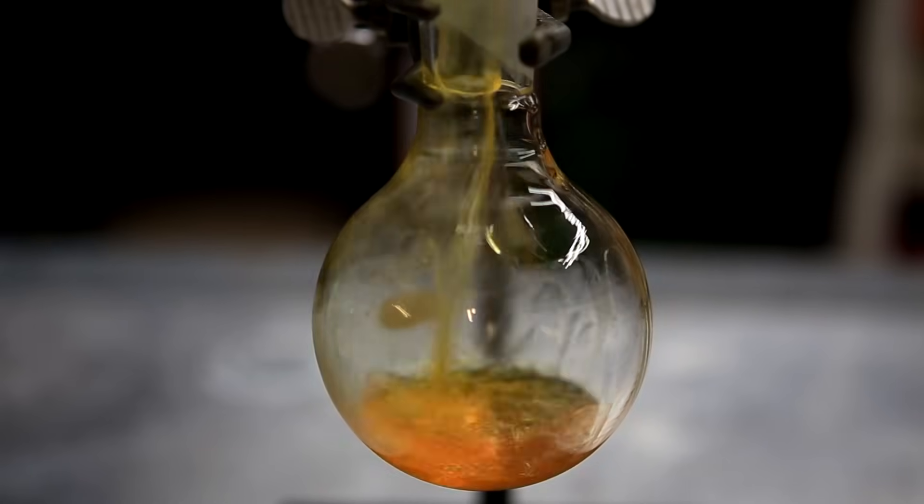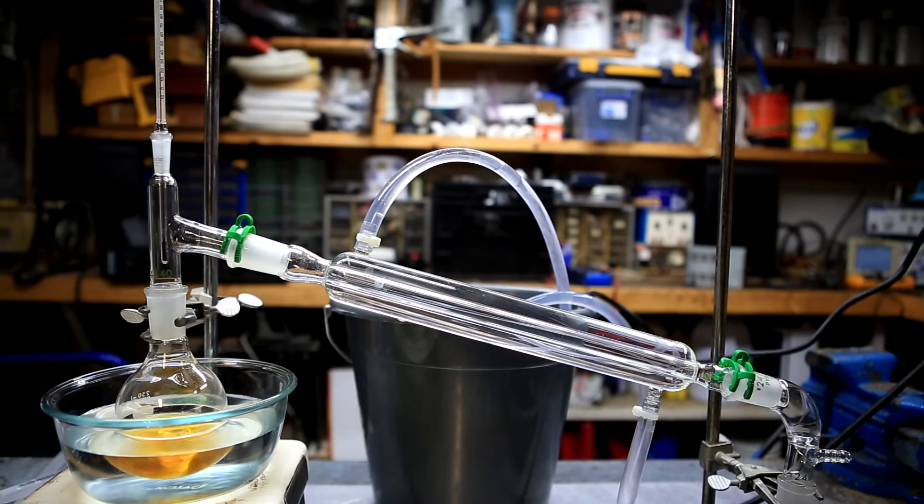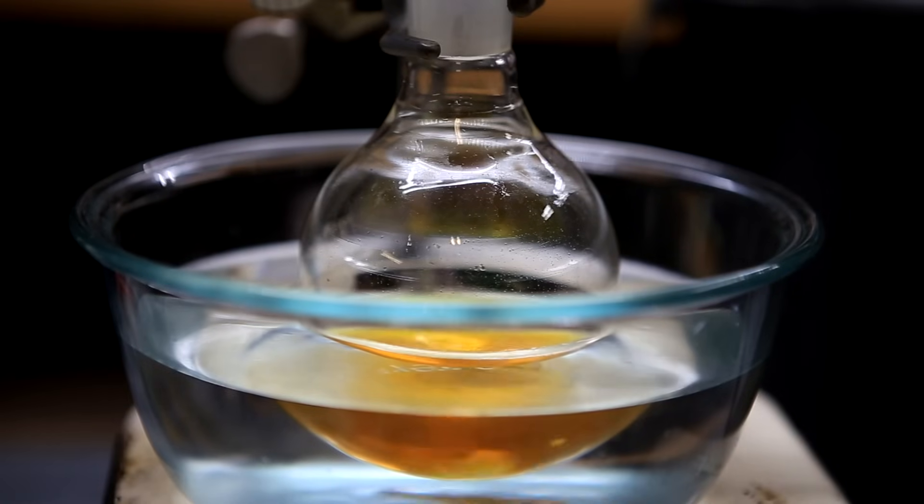This now much drier benzene is then transferred to a round bottom flask for distillation. A distillation is carried out to separate the benzene from the crude. The only fraction that came over was around 79 to 80 degrees celsius, which corresponds well to the boiling point of benzene.